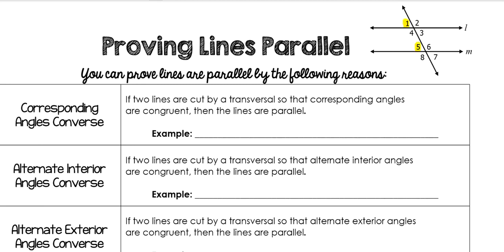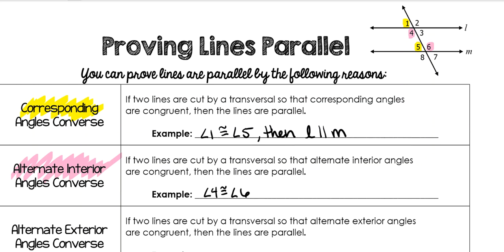In other words, if I know that angle 1 is congruent to angle 5, because those are corresponding angles — they're on the same side and they skip over angle 4 — then I know that these two lines, L and M, are parallel. L would be parallel to M. Alternate interior angles, or the converse of alternate interior angles, says if you know that alternate interior angles are congruent. So if you know that angle 4 is congruent to angle 6, then you would know that L is parallel to M.